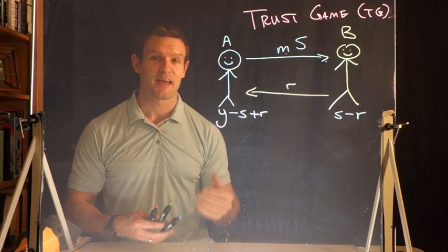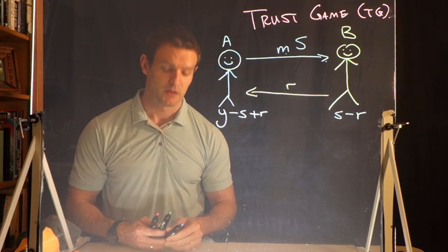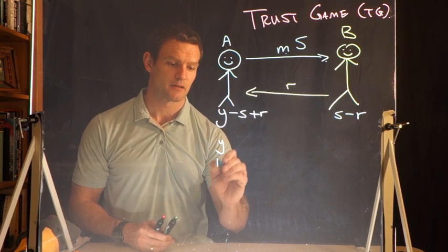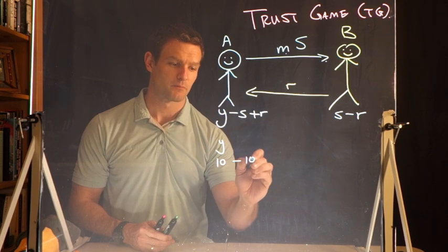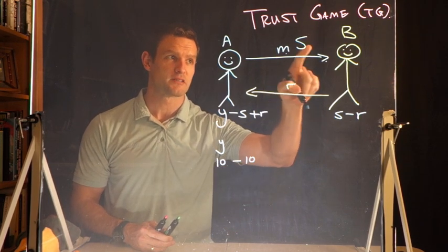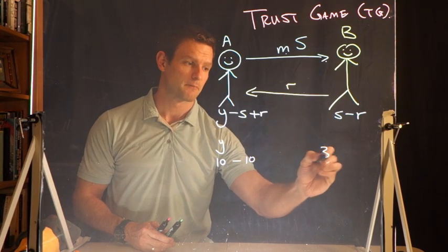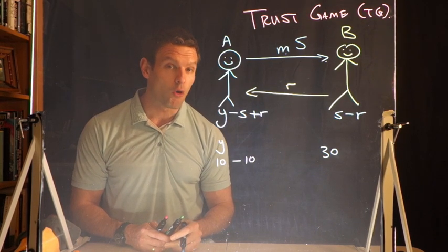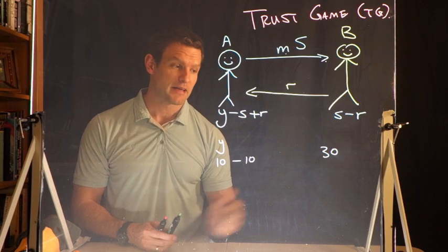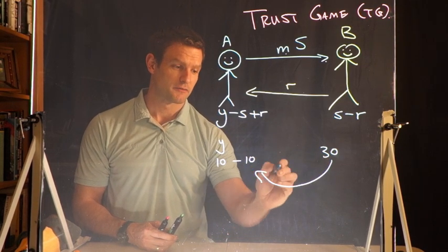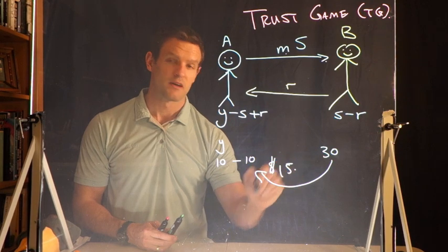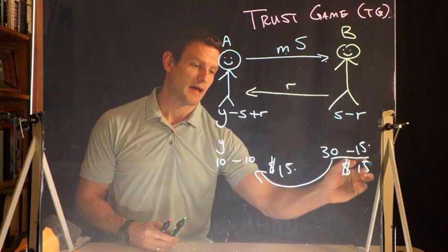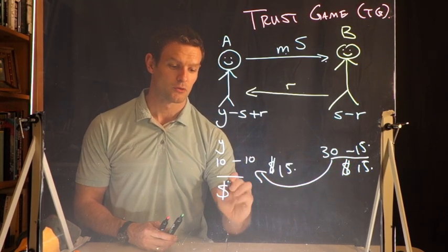Alternatively, imagine A sends the entire $10 to B. So Y equals 10, S equals 10. Three times the amount sent would be $30. B could choose to keep all $30, or send some amount back. If B sends back $15, then player B has $15 and player A also ends up with $15.